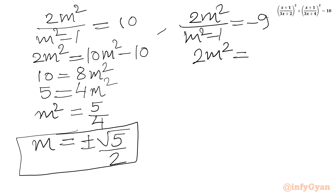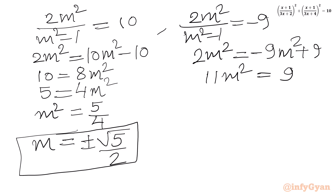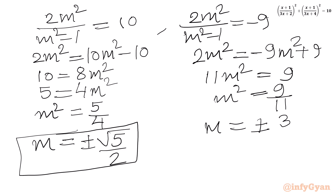Now solving 2m²/(m²−1) = −9. Cross-multiplying: 2m² = −9m²+9, so 11m² = 9, giving m² = 9/11. Taking the square root: m = ±3/√11.